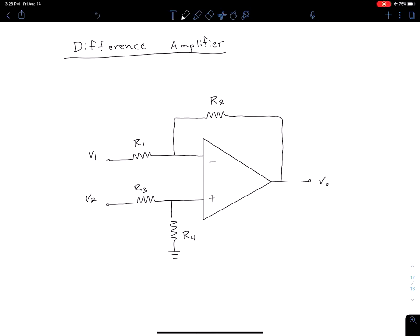The next configuration we're going to look at is a difference amplifier. Looking at the circuit here, we notice this is a little different from the configurations we've considered thus far because neither the inverting or the non-inverting terminals are connected directly to ground. So we're not going to be able to use that virtual ground trick that we did in previous configurations.